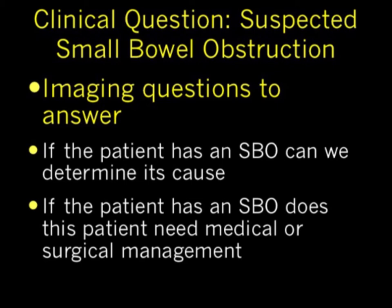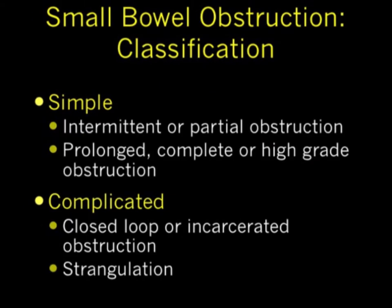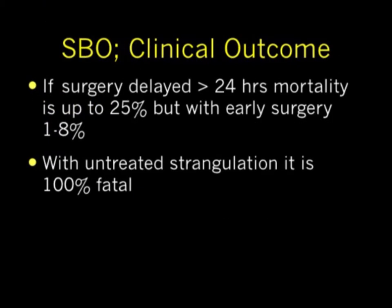There are ways of classifying bowel obstruction as simple versus complicated. Simple is described more as intermittent or partial obstruction, though it can occasionally result in high-grade obstruction. Complicated are the ones that go to surgery, with high morbidity and high mortality. These include closed loop or incarcerated obstruction within a hernia or strangulation. If surgery is delayed more than 24 hours, mortality is up to 25%, while with early surgery it may be as low as 1%. Untreated strangulation is 100% fatal.